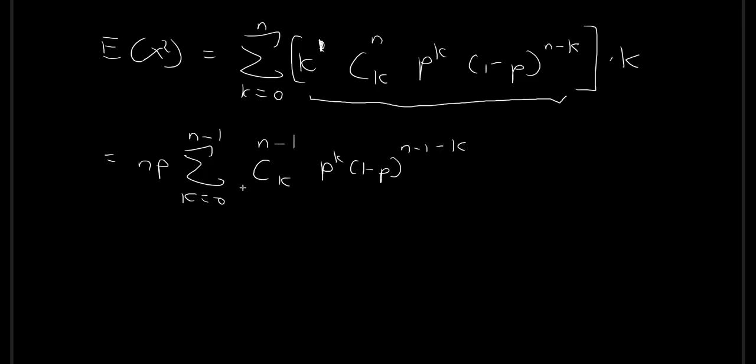So this is the term that we had in the last video. But then what's different in this video is that we also have an extra k over here outside. And so also because we shifted down by one step in our summation, we also need to compensate this by adding back 1.